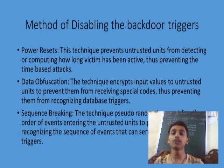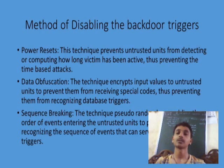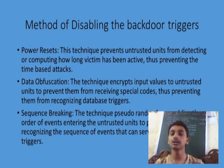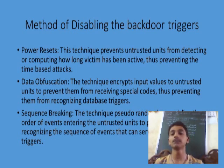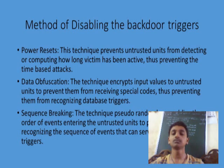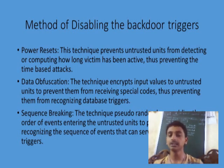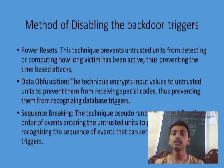The second method is data obfuscation. In data obfuscation, the hacker or perpetrator can be confused about when the system is active or logged out. This technique encrypts input values to untrusted units to prevent them from receiving special codes, thus preventing them from recognizing database triggers.